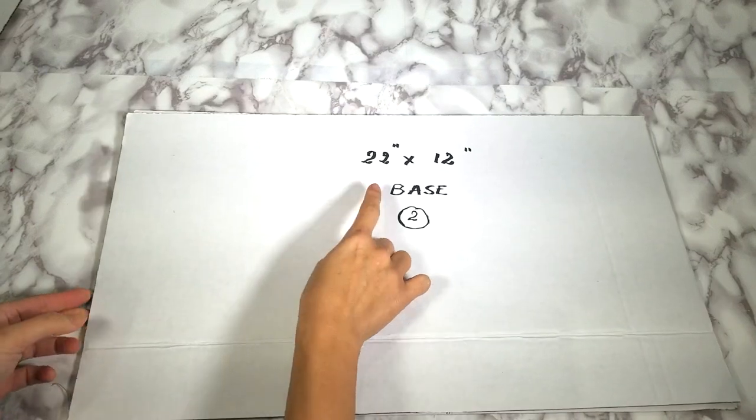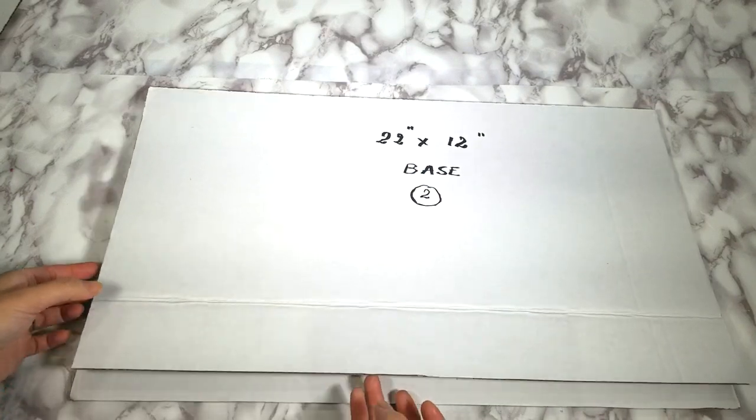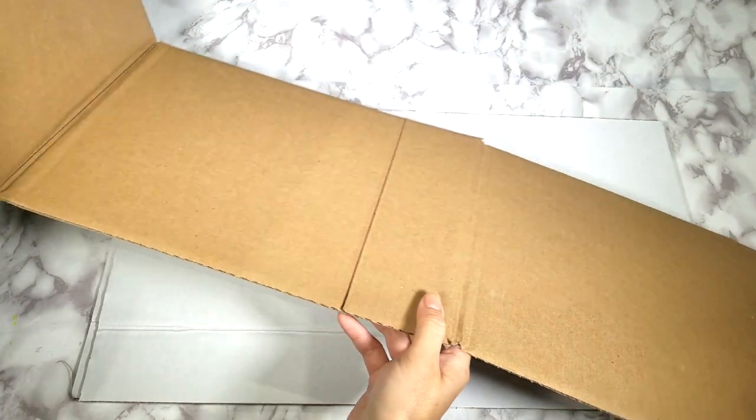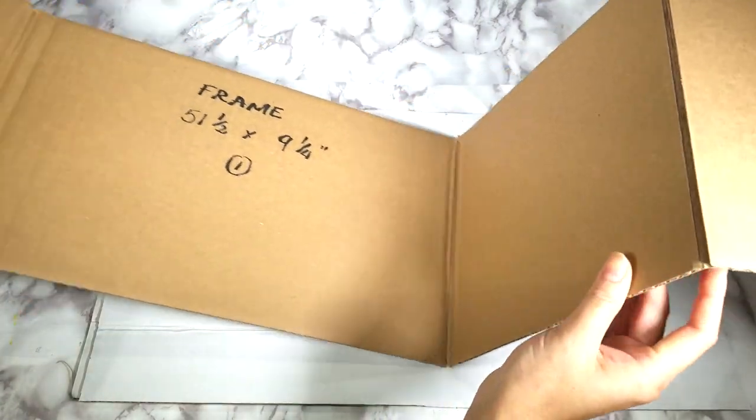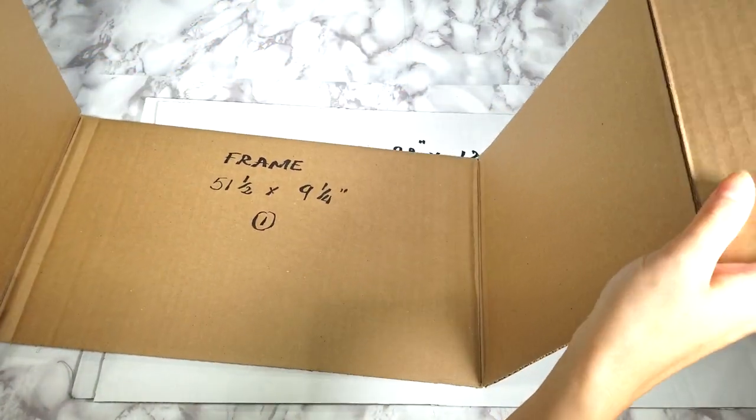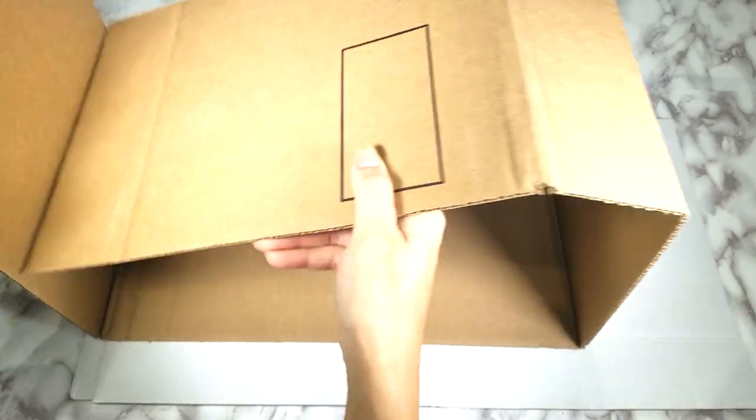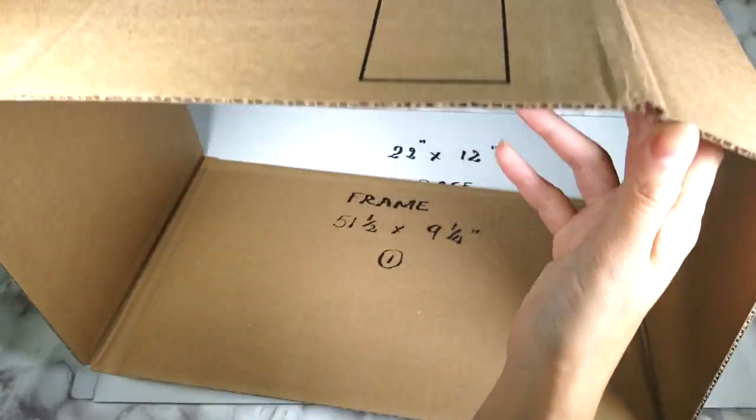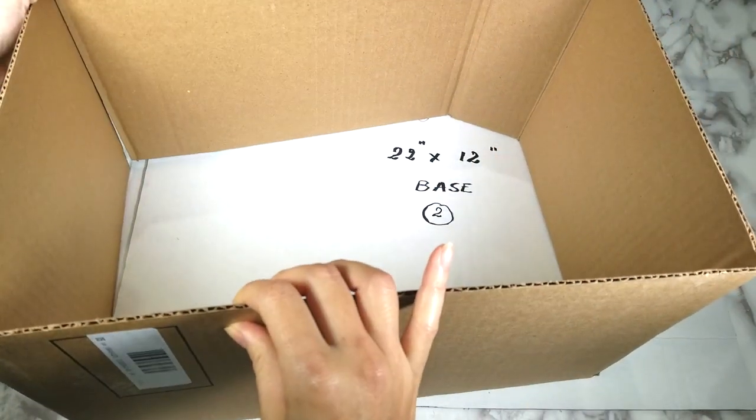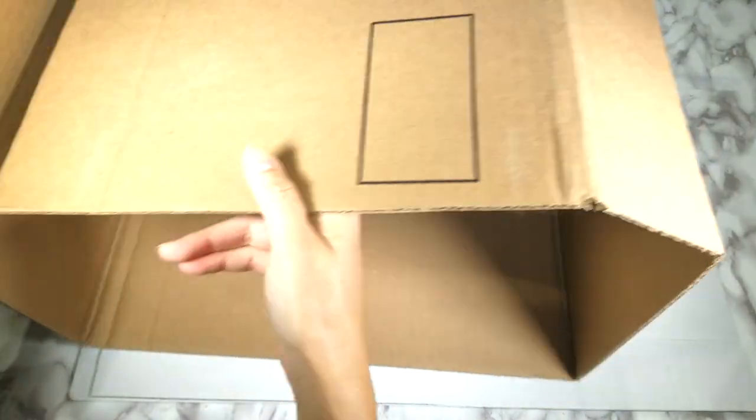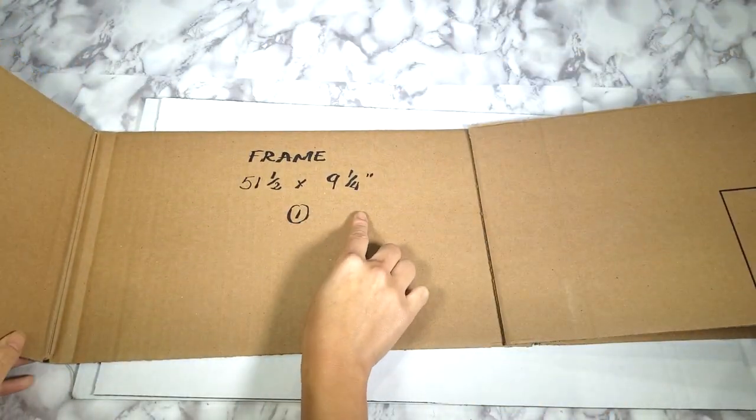To start I measure and cut out the cardboard pieces with the measurements as follow. For the base we need two pieces with a measurement of 22 inches by 12 inches. For the mainframe piece I cut out a long piece that's going to be folded into a rectangle shape and you can start out by using a carton box as well. The size of the piece is 51 and a half by 9 and a quarter and it's being folded to match the back which is 16 by 9 and three quarters.